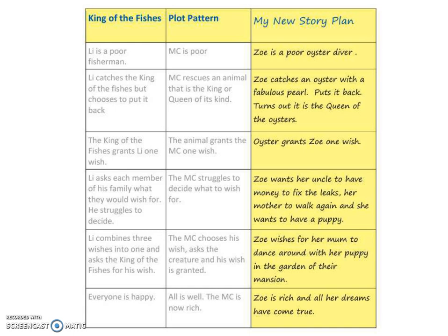You'll find a copy of this on the website. In my version, I've kept close to the plot pattern: the main character is poor, so my version has Zoe as a poor oyster diver. The plot pattern says the main character rescues an animal that is king or queen of its kind — so Zoe catches an oyster who happens to be queen of the oysters and places her back in the water. The oyster grants Zoe one wish, and so on. All I've really done is change the main character, the animal, and the three wishes.